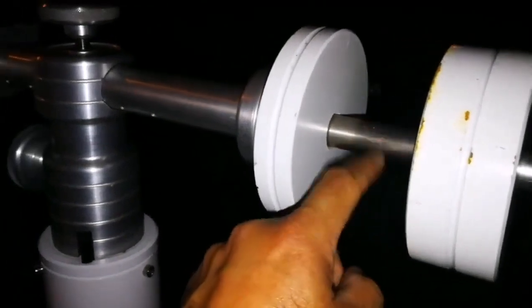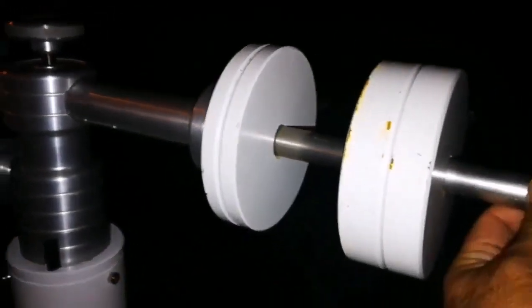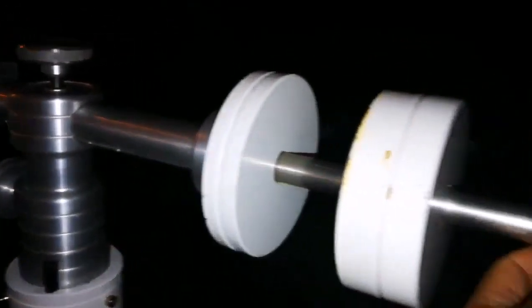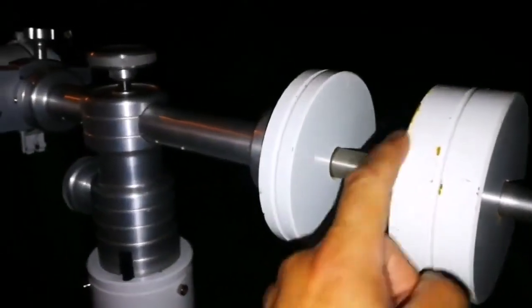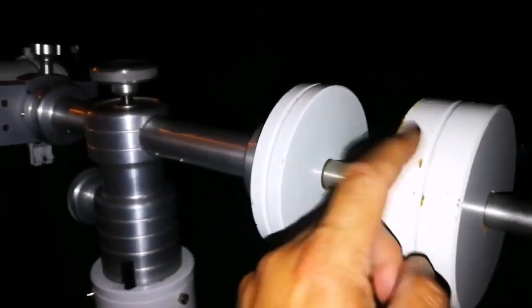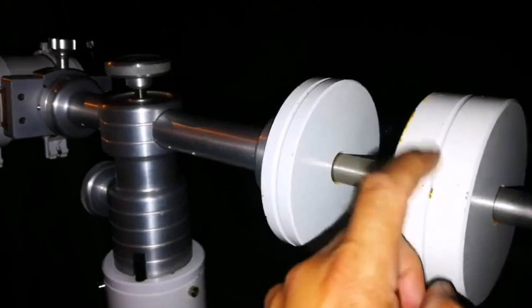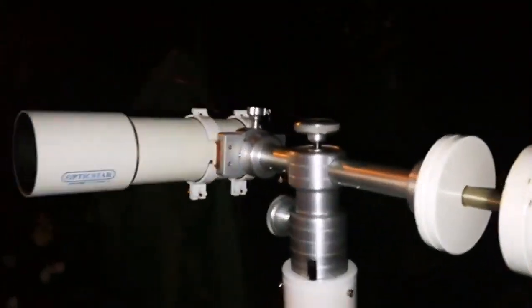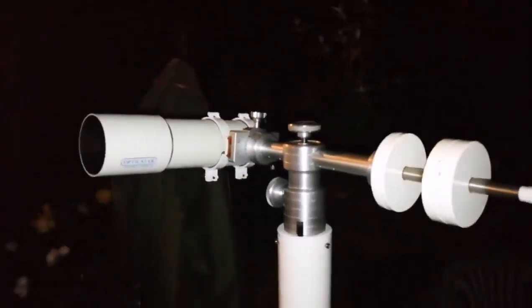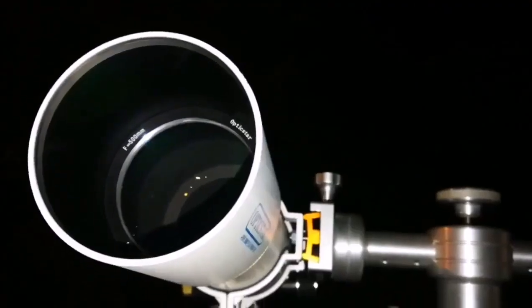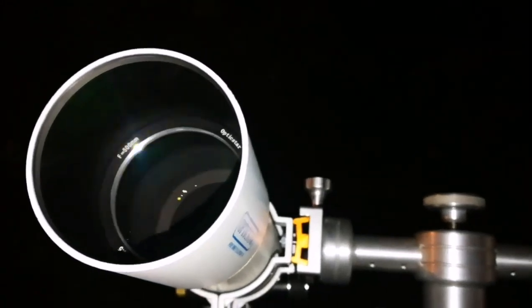Sabre didn't have the counterweight shaft, so I just used the bar without actually any screw. And these are the counterweight weights for the EQ3 here. Fantastic telescope for under 200 pounds.